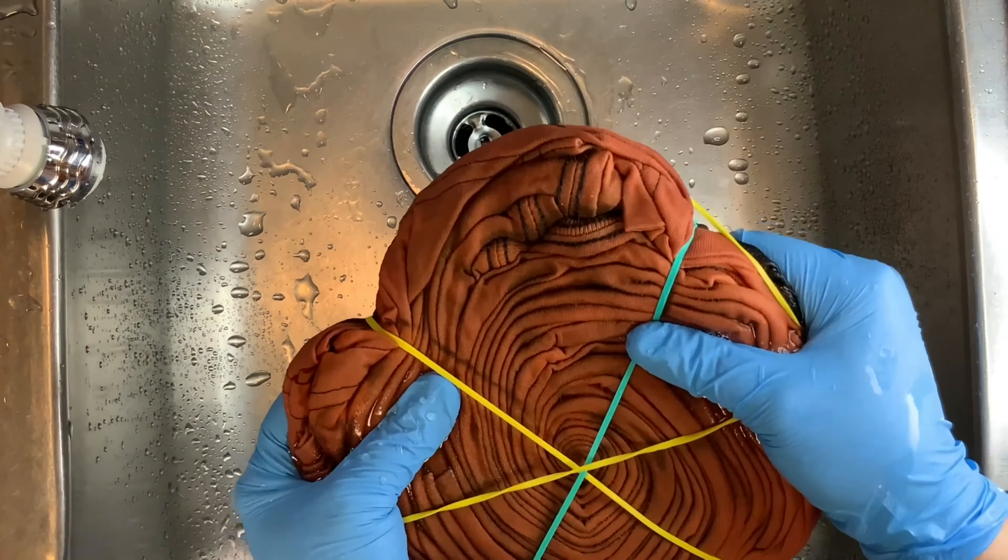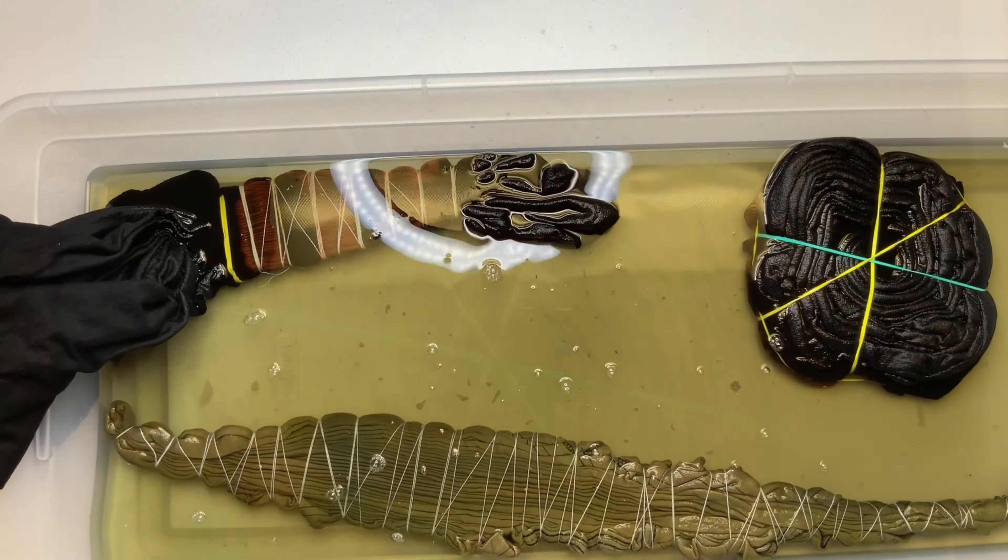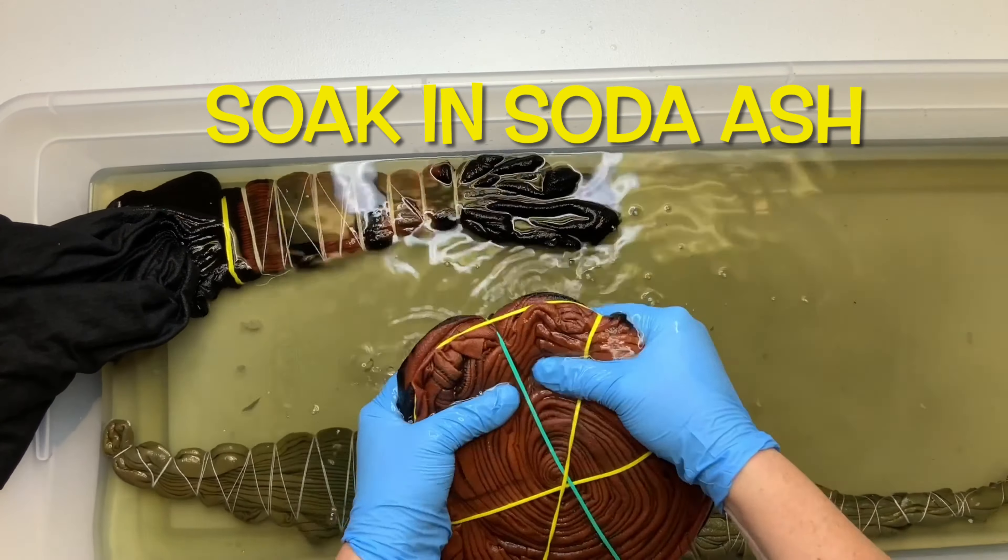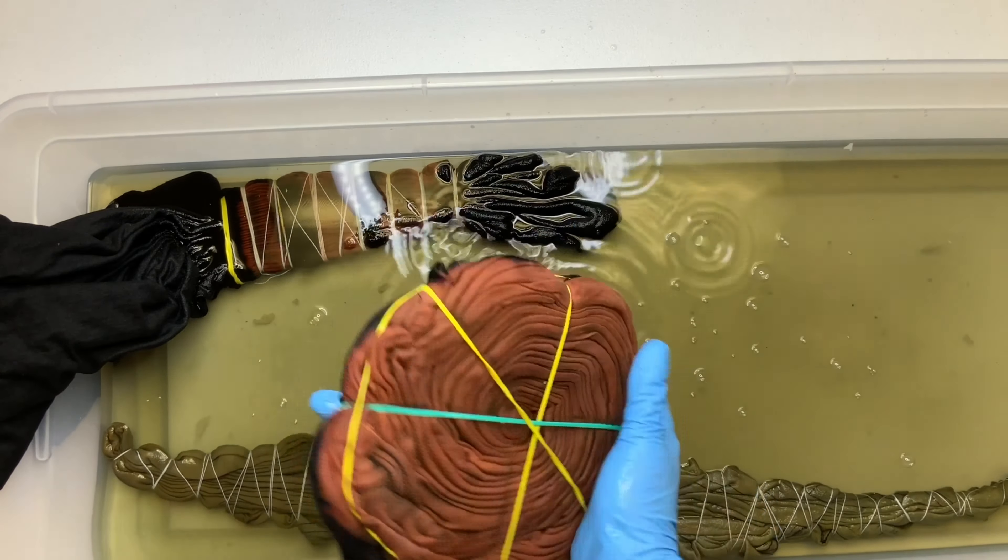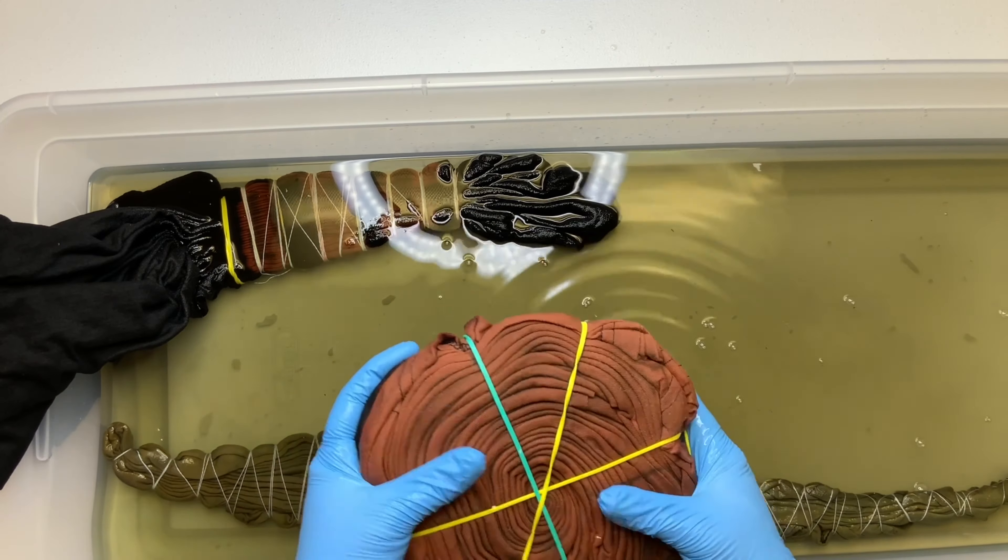The next step, the shirt needs to soak in soda ash. I let my shirt soak for about an hour just to make sure that it really got a good thorough soak because it was so wet from the sink.